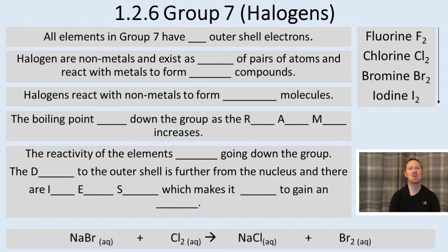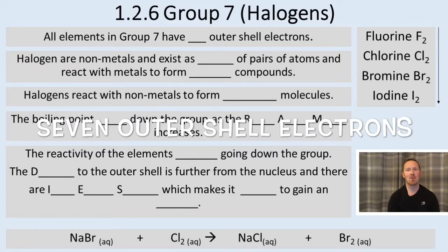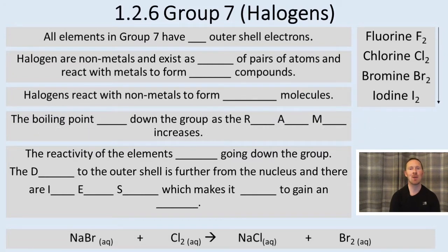1.2.6, Group 7, the halogens. You need to know all elements in Group 7 have 7 outer shell electrons. They need to gain 1 electron to form a stable electron arrangement.